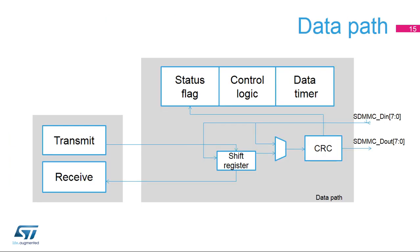The datapath transfers data both to and from the SD, SDIO, or MMC card. On each SDMMC CK clock cycle, the datapath can send one, four, or eight bits depending on the bus width configuration. Transfer logic is clocked by the SDMMC CLK clock. It is divided into two subunits: one for data sent and one for data received, with dedicated control bits and status flags. The data buffer is not part of the datapath; transmit and receive FIFO logic are mapped in the APB domain. All signals from the different subunits are resynchronized. The CRC calculator guarantees data integrity between the card and host.